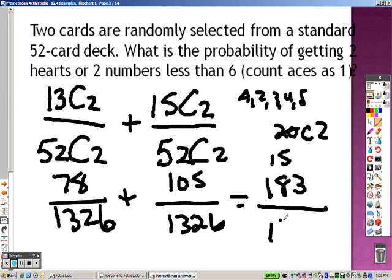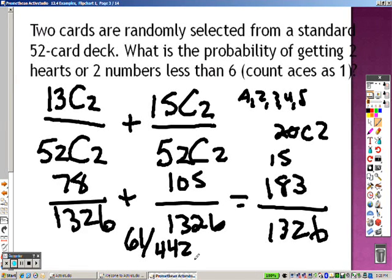And 183 divided by 1,326 is 61 out of 442 is the odds there of getting that.